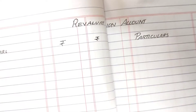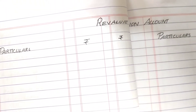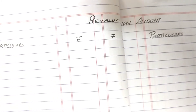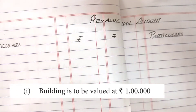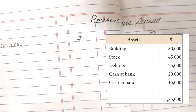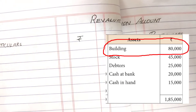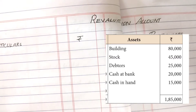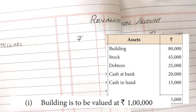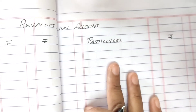The first account we open is the revaluation account. The format for both the debit and credit sides is ready. The first adjustment: buildings are to be revalued at 1 lakh. We compare with the balance sheet — buildings are 80,000 in the balance sheet. The new value is 1 lakh, so the asset value has increased. When an asset value increases it goes to the credit side of the revaluation account.